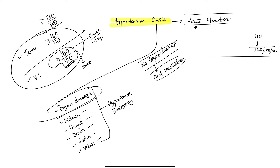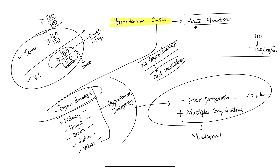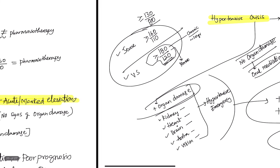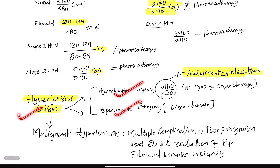If there is organ damage, then we are worried. Organ damage plus poor prognosis — if you don't treat this patient, they could die within less than 24 hours. If the patient already has multiple complications, such as previous strokes or cardiac events, and presents with acute hypertension and organ damage, we call this malignant hypertension. This patient requires immediate reduction of BP within hours. Note that in hypertensive emergency, you cannot reduce BP immediately due to risk of hypotension and ischemic damage — you must do it slowly and titrate the dose. But in malignant hypertension, you must quickly reduce the BP.